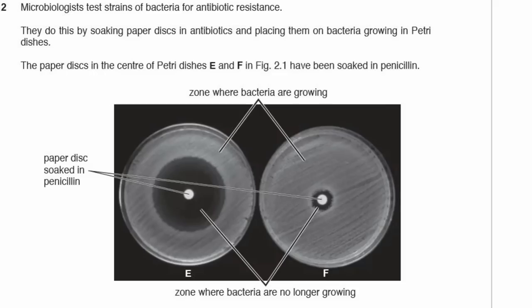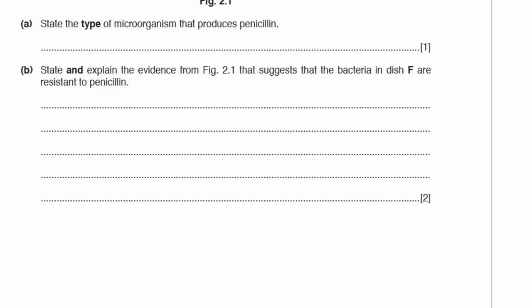Let's move to Question 2. Microbiologists test strains of bacteria for antibiotic resistance by soaking paper disks in antibiotics and placing them on bacteria growing in Petri dishes. The paper disks in the center of Petri dishes E and F have been soaked in penicillin. We have zones here — a small zone and a big zone — where there is no bacteria growing. The white area is where bacteria are growing. State the type of microorganism that produces penicillin: it is a fungus.